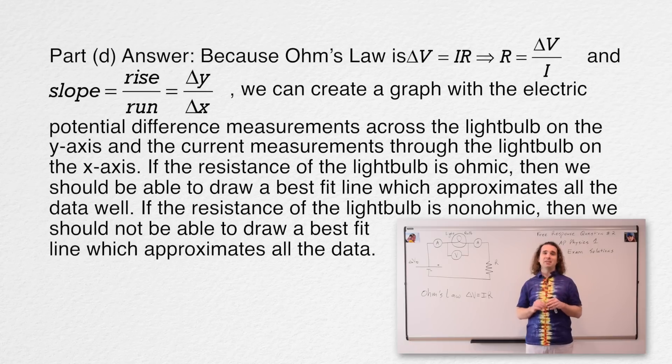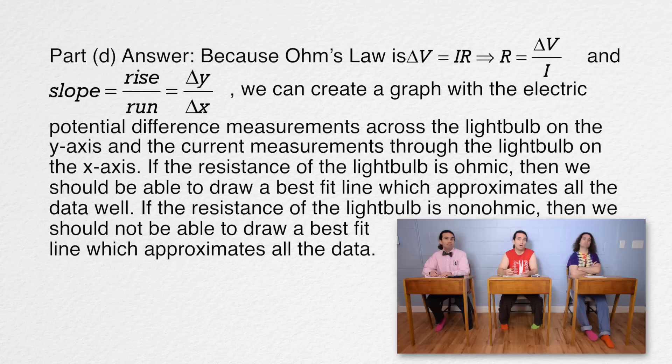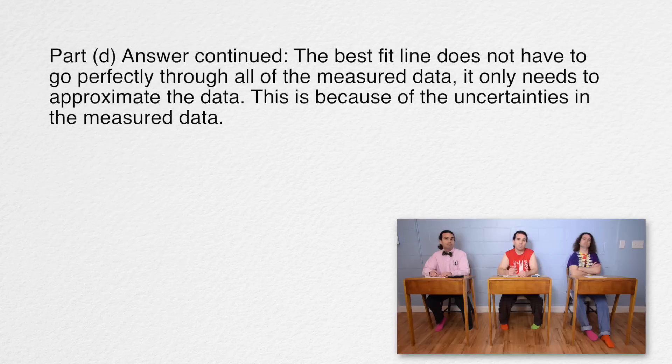Be careful, Bobby. It specifically states you need to include a discussion of how the uncertainties affect your argument. Okay. Add, the best fit line does not have to go perfectly through all the measured data. It only needs to approximate the data. This is because of the uncertainties in the measured data. Does that work? Absolutely.